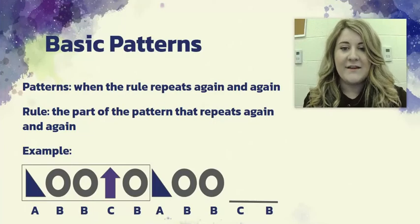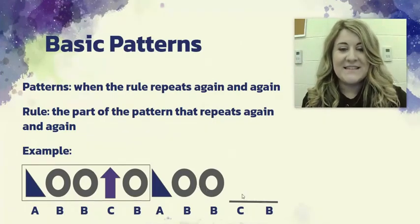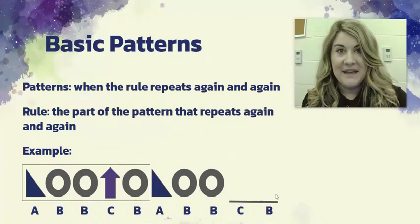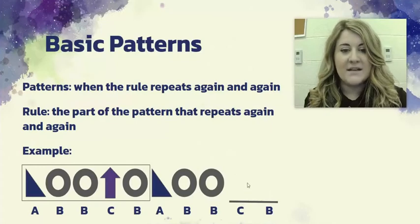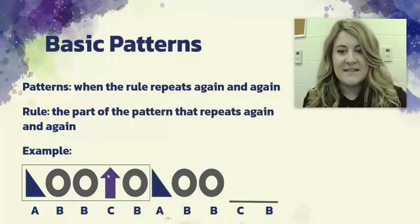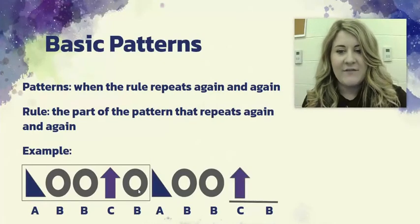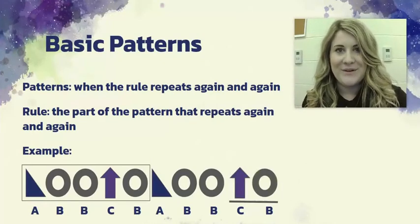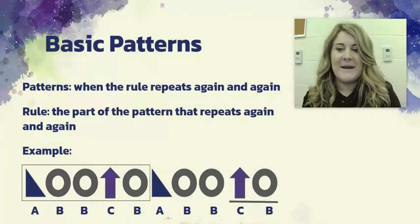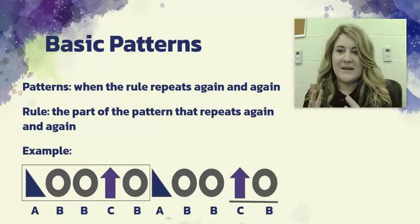The pattern is ABBCB, then ABBCB again. The next shape that goes with C is a purple arrow, and after that we have another B — a gray circle. Now we have completed the pattern. This is our ABBCB basic pattern.